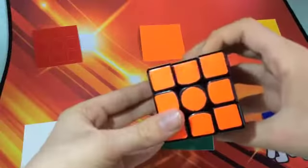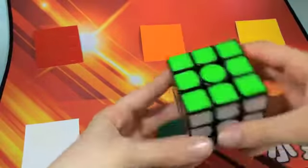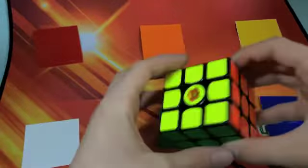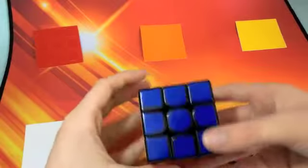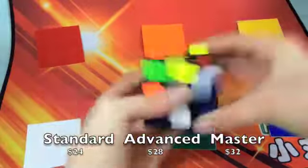The Gans 356 comes in three versions: Standard, Advanced and Master. The cubes are all essentially the same, but with different accessories like screwdrivers, extra stickers or better quality stickers. The actual cube itself is the same.